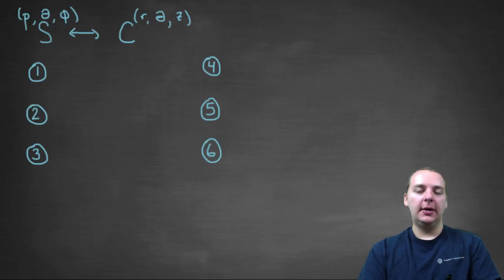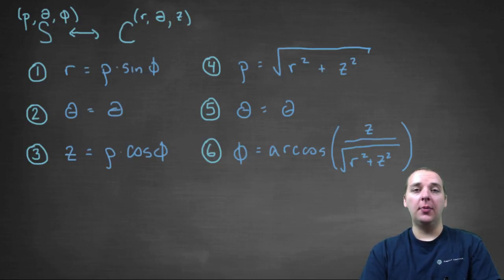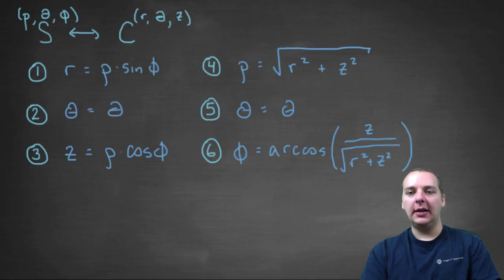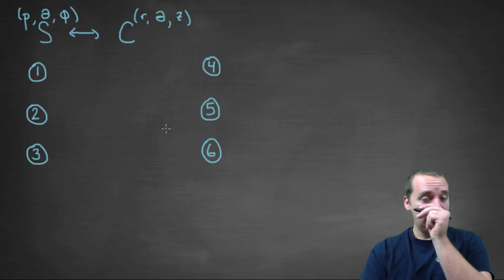If you're a little pressed for time, here are the conversions we're going to derive — six of them from cylindrical to spherical and back. If you just need them and don't care about the derivations, you can pause this video, jot them down, and continue to the example videos. But we're going to take a minute to actually derive these and see where they come from, because it's interesting. If you want to stay with us, great; if not, you can go on to the example videos.